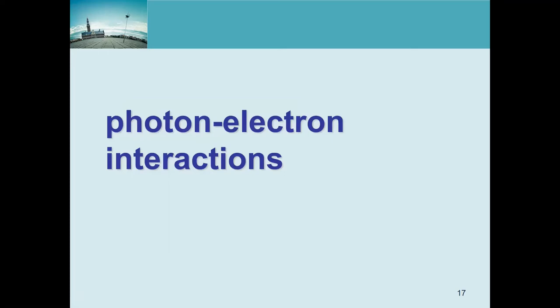Some words about photon-electron interactions - why do we care? The patient is injected with a radioactive tracer emitting photons, and we want to use those photons to make an image. We would like all these photons to leave the body, but unfortunately they will not, because they travel through the body and encounter a huge amount of electrons. There is a significant chance they will interact with at least one, and if they interact, the photon may change direction or energy.